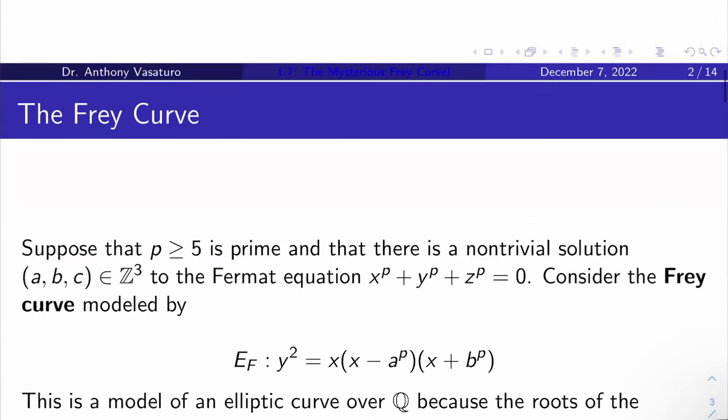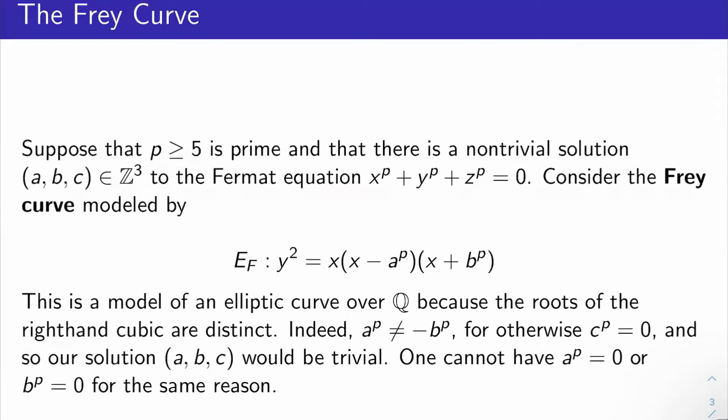So let's take a prime p at least 5, and let's assume there is a non-trivial integer solution to the Fermat equation with exponent p, and let's try to find a contradiction.